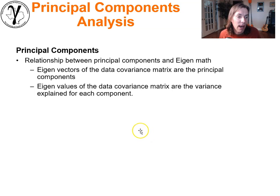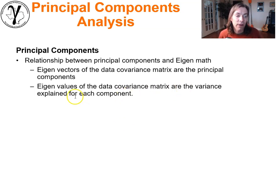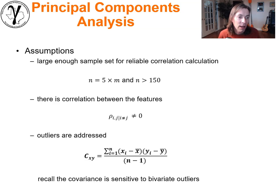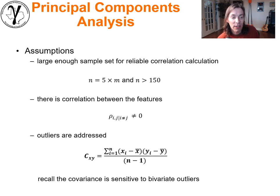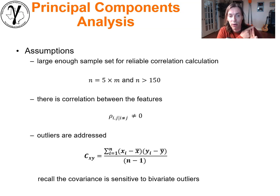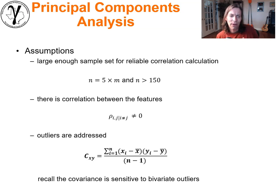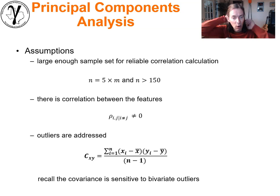Eigenvectors of the data covariance matrix are the principal components, and eigenvalues are the variance explained. There are some assumptions to cover: we need a large enough sample set for reliable correlation calculation. Outliers are a big deal. Some suggest we need at least five times the number of features to understand the pairwise covariances, and a minimum of around 100–150 data points overall.